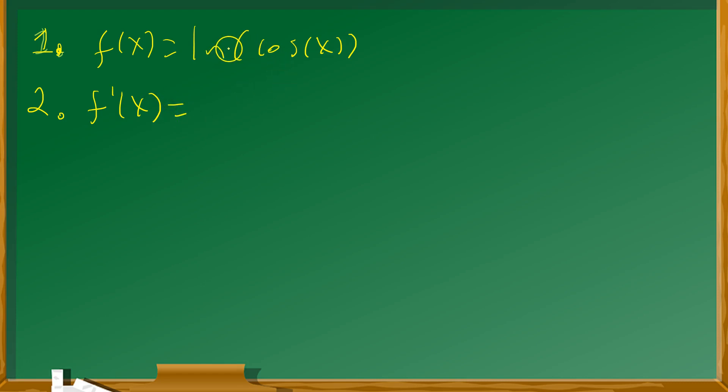Because you have the ln function, the natural log function, you have the cosine function plugged into it, that tells you this is a composition of two functions. In other words, it's telling you you got to use the chain rule.